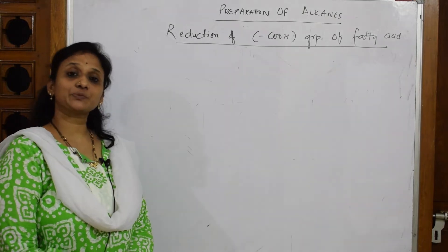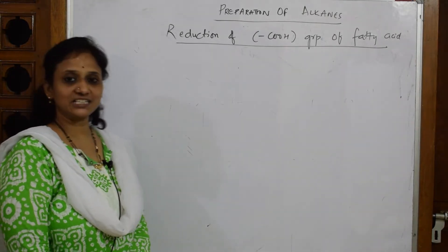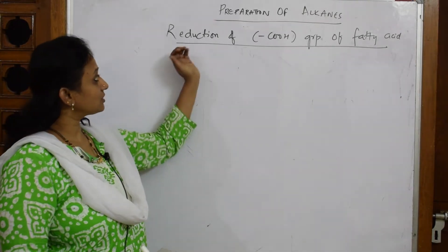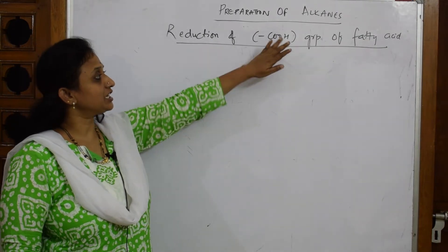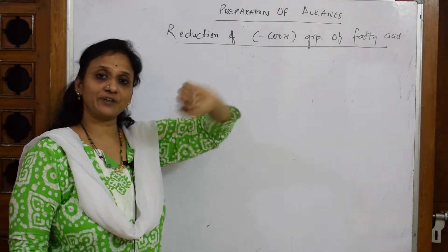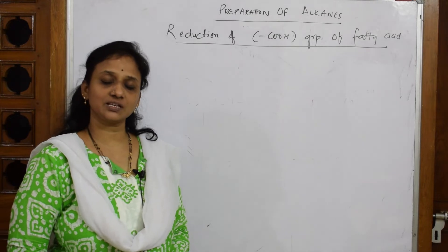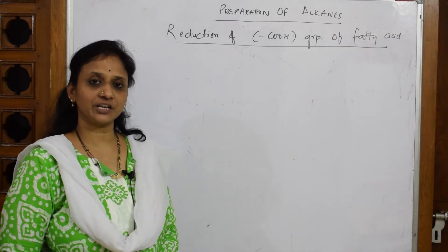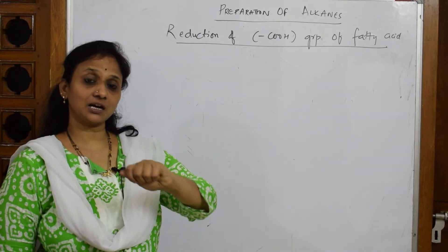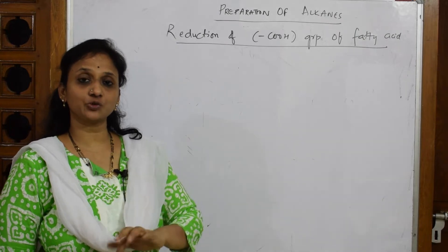Now let's come back and see the next preparation of alkanes. Very interesting reaction here. We are going to prepare alkanes by reducing the COOH group of fatty acid. Whatever long chain fatty acid we take, that particular carboxylic group or COOH group from there we are going to reduce it to prepare an alkane.